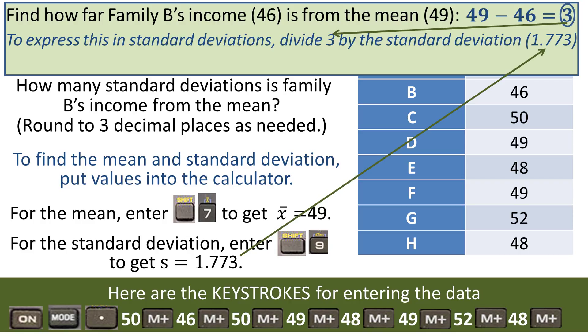And that's the way it will always be. You find the difference and then you divide by the standard deviation. We've already found the difference to be three. And we know the standard deviation is 1.773. So we divide and it comes out to be 1.692.